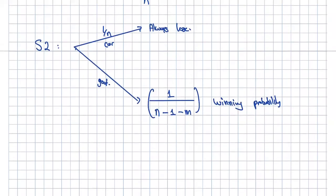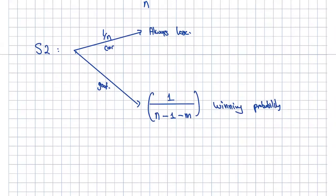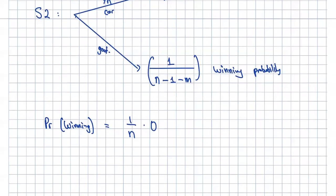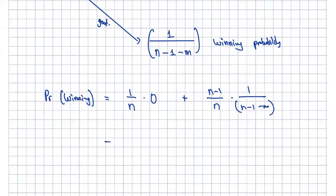Putting it together: the overall probability of winning when always switching is — with one-over-N probability you picked the car so you get zero, plus with probability (N minus one) over N you picked a goat and then win with probability one over (N minus one minus M). So the overall probability of winning is: (N minus one) over N times one over (N minus one minus M), which simplifies to (N minus one) over [N times (N minus M minus one)].